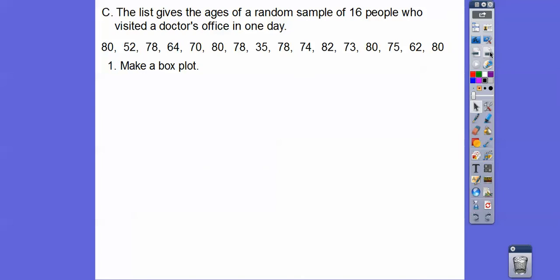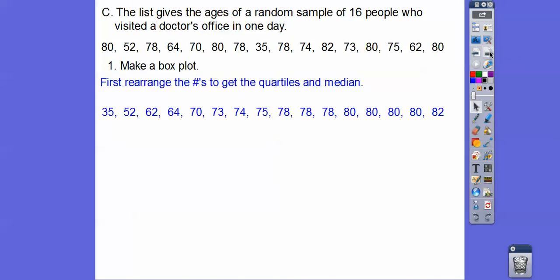So here's another one. This list gives the ages of random samples of 16 people who visited a doctor's office one day. Make a box plot. So we first got to rearrange those numbers from smallest to biggest. So there they are, rearranged. I just did that. So let's find the middle number. There's the middle. So it's halfway between 75 and 78, so 76.5.